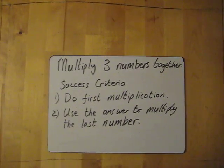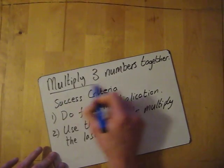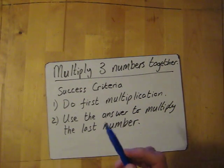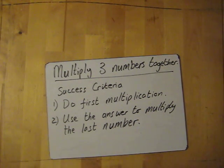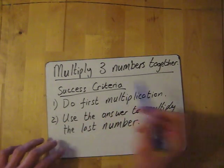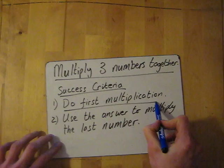Right, multiplying three numbers together. Again, this is very straightforward and relates to two by one long multiplication if you need it, but you might not need it. So success criteria here: dead simple, do the first multiplication.